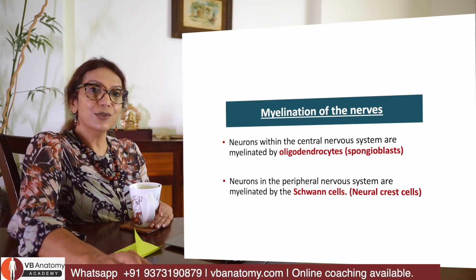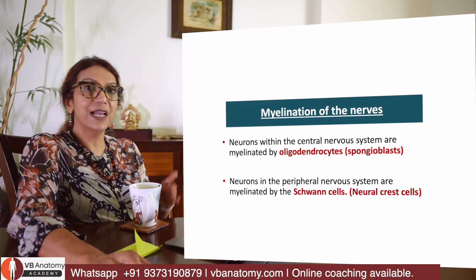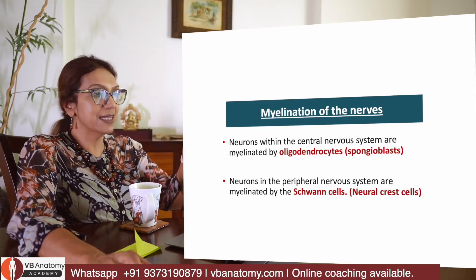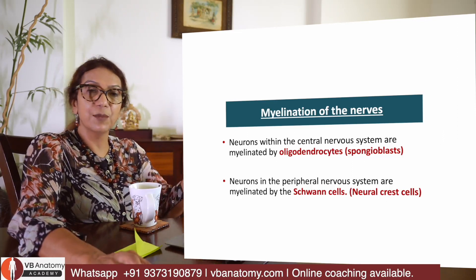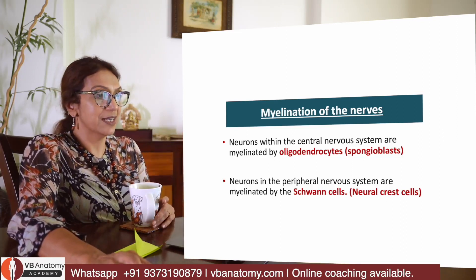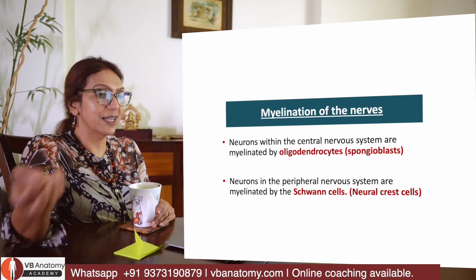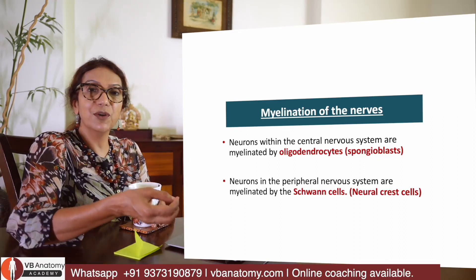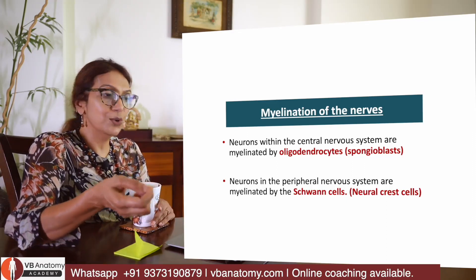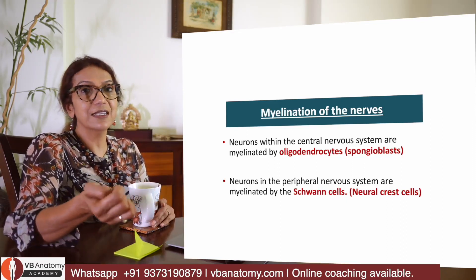Whatever axons are lying inside the CNS are myelinated by oligodendrocytes. If they are lying outside, their myelin is derived from neural crest cells.